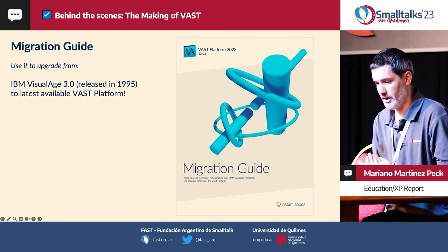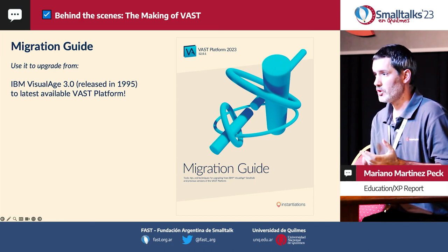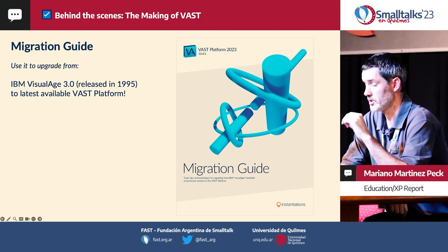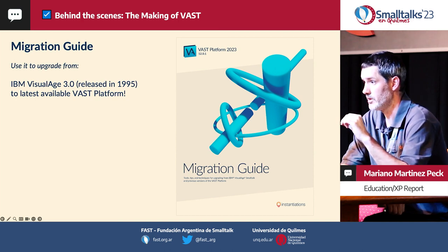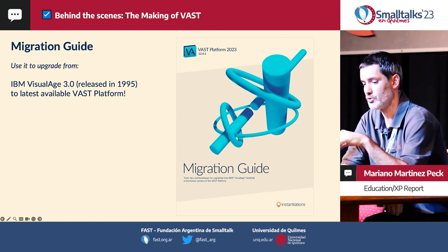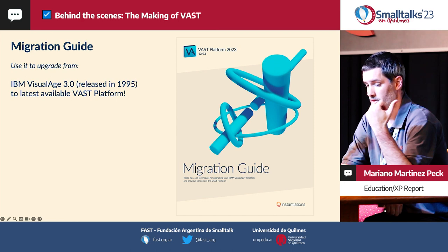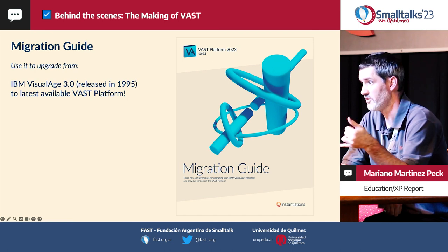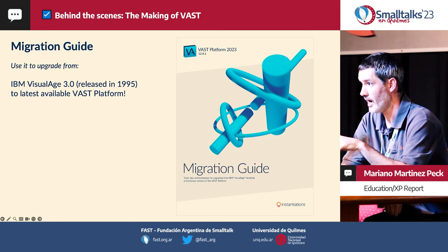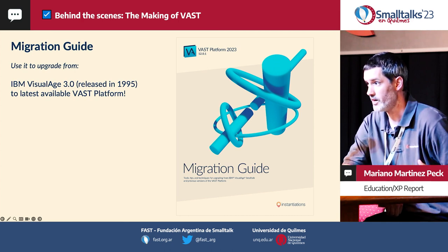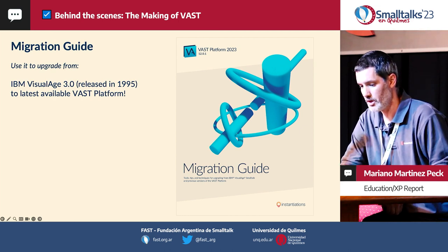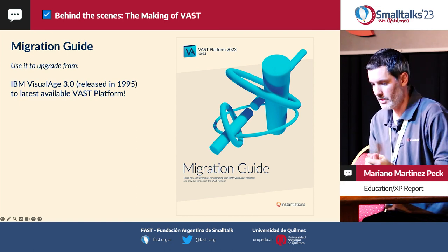For the migration guide — this is critical for us. Each time we make a change that would break compatibility or force customers to change something, we add it to the migration guide. This guide gives our customers a path forward from all versions. In fact, our migration guide dates back to Visual Age 3.0, released in 1995. So if you download the migration guide right now, you have a path forward from 1995 to the very latest version of BAST, with every change, an explanation, and an action for every change.